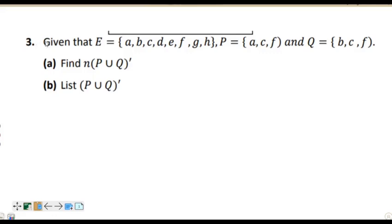The question reads: given that E is equal to {A, B, C, D, E, F, G, and H}. So E is the universal set containing all the elements that have been used. We have set P, which has the elements A, C, and F. We also have set Q, which has the elements B, C, and F.